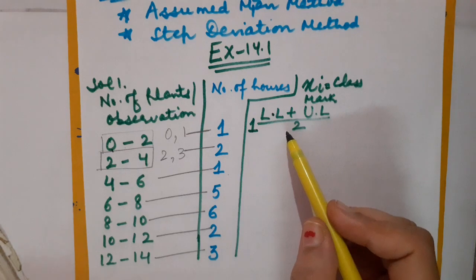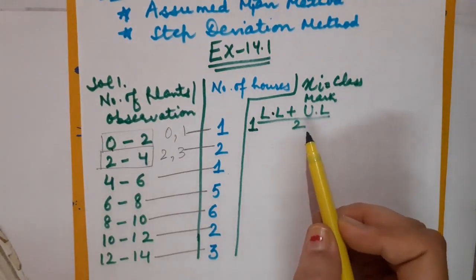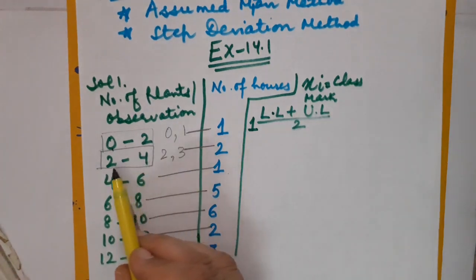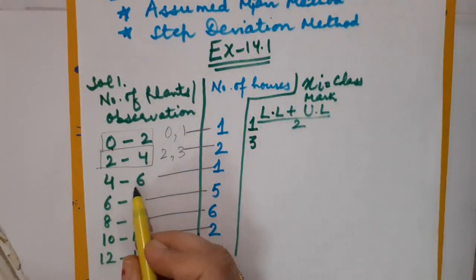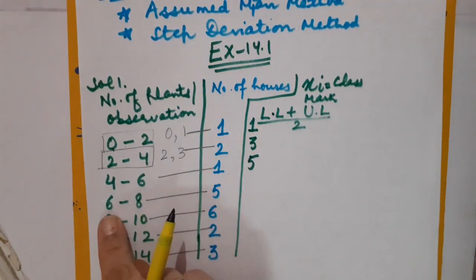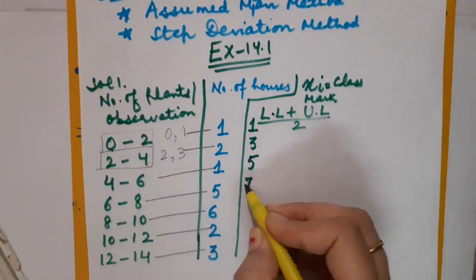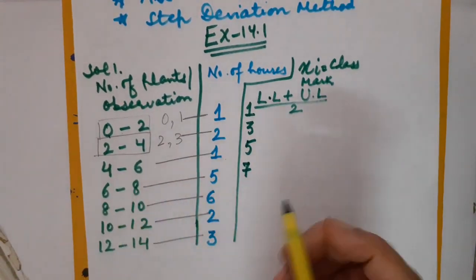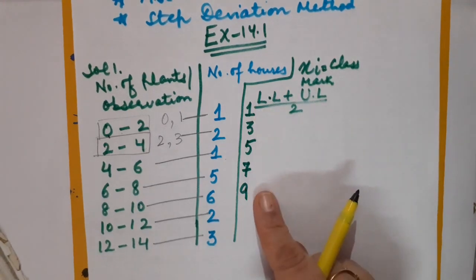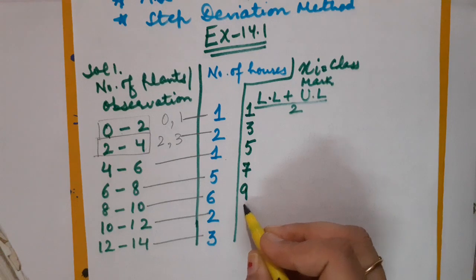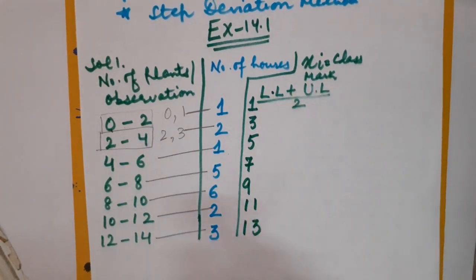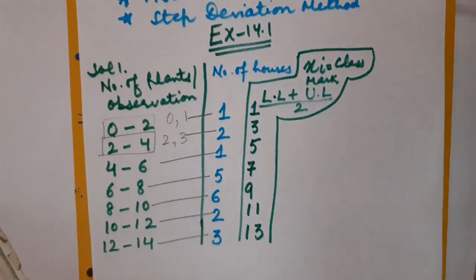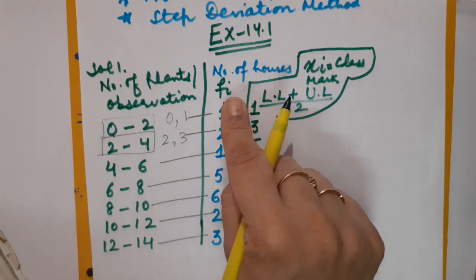Calculating class marks for all intervals: (2+4)/2 = 3; (4+6)/2 = 5; (6+8)/2 = 7; (8+10)/2 = 9; (10+12)/2 = 11; (12+14)/2 = 13. You can observe these are all odd numbers. The number of houses is the frequency, represented by Fi. Now according to the formula of the direct method, I need the product of xi and Fi, so I will calculate Fi×xi.